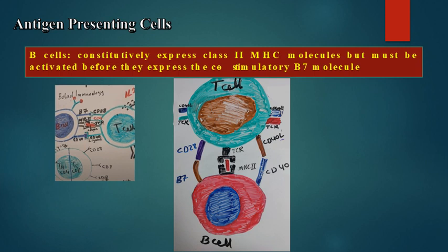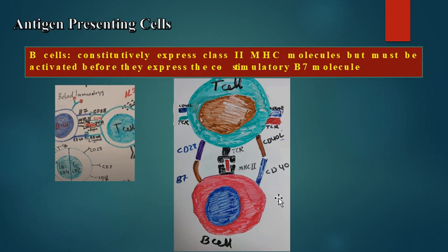In the case of B-cells, they are more similar to dendritic cells in that they constitutively express MHC class II molecules. However, B-cells must first be activated before they express the co-stimulatory molecule B7. This is a very important distinction.